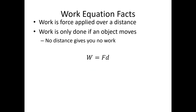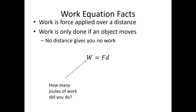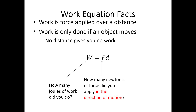Work is force applied over a distance — it's only done if an object moves. If you don't get any distance, no matter how much you push, you'll do no work because anything times zero is zero. So when looking at this equation: W is the joules of work done, F is the newtons of force in the direction of motion, and D is the meters moved. Given any two, you can solve for the third.